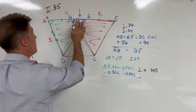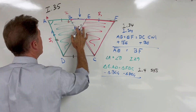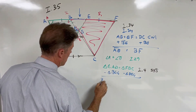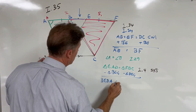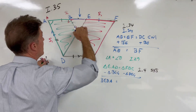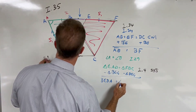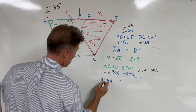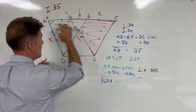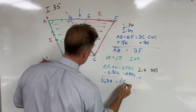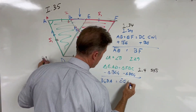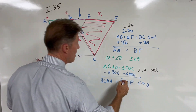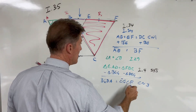What we're left with is the trapezoidal shape ABDE equals the trapezoidal shape EGCF. This is Common Notion 3 — when we subtract equals from equals, the remainders are equal.